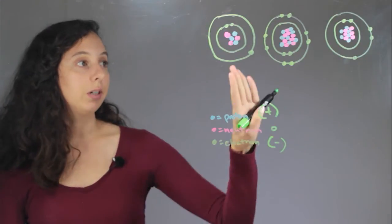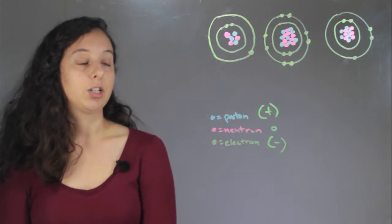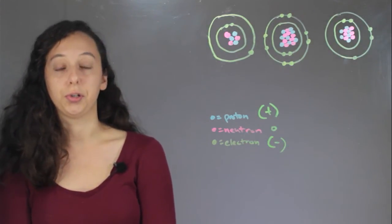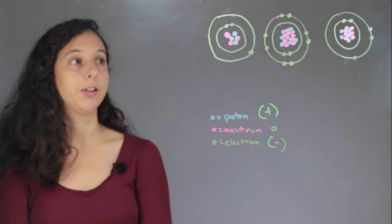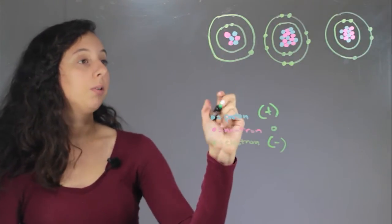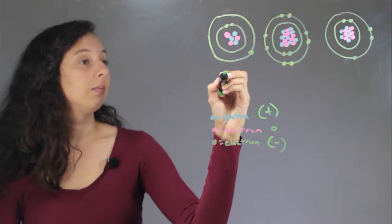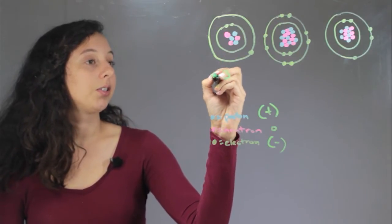So let's take a look at three different atoms and see if it's actually an ion or it's just a neutral atom. So first we have this. Our protons we have one, two, three, positive three.